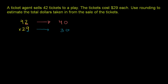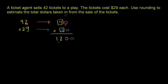So now we can multiply. You could call it a trick, or hopefully you understand why it works. 30 times 40 is the same thing as 3 times 4 with two zeros at the end of it. 3 times 4 is 12, and then we have two zeros — one zero and the blue zero. So we're going to have roughly $1,200 taken in from sales of the tickets. That is our estimate.